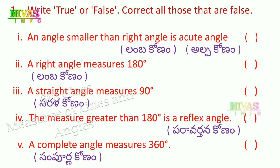First problem: an angle smaller than a right angle is an acute angle. This is true.